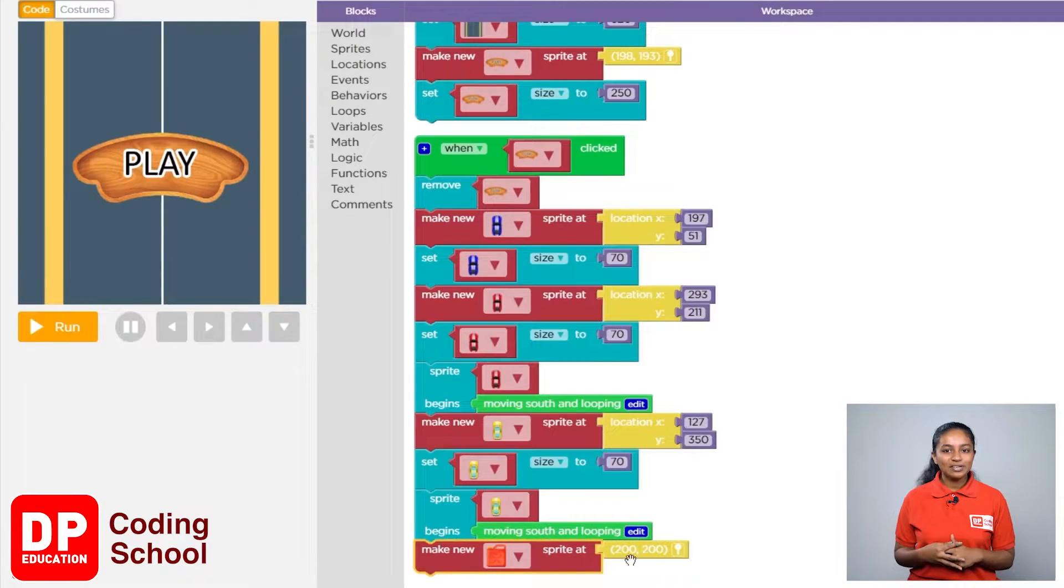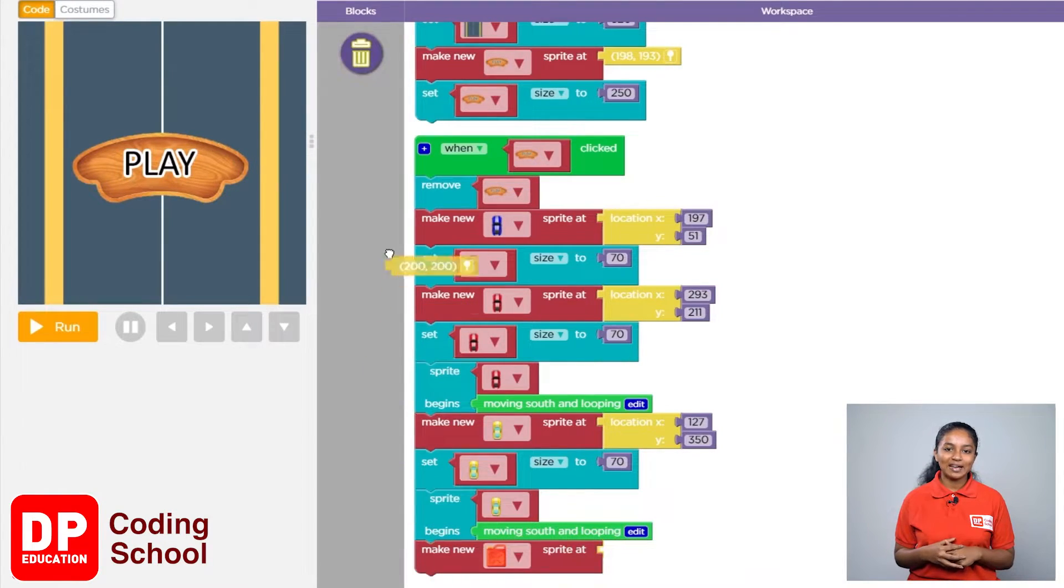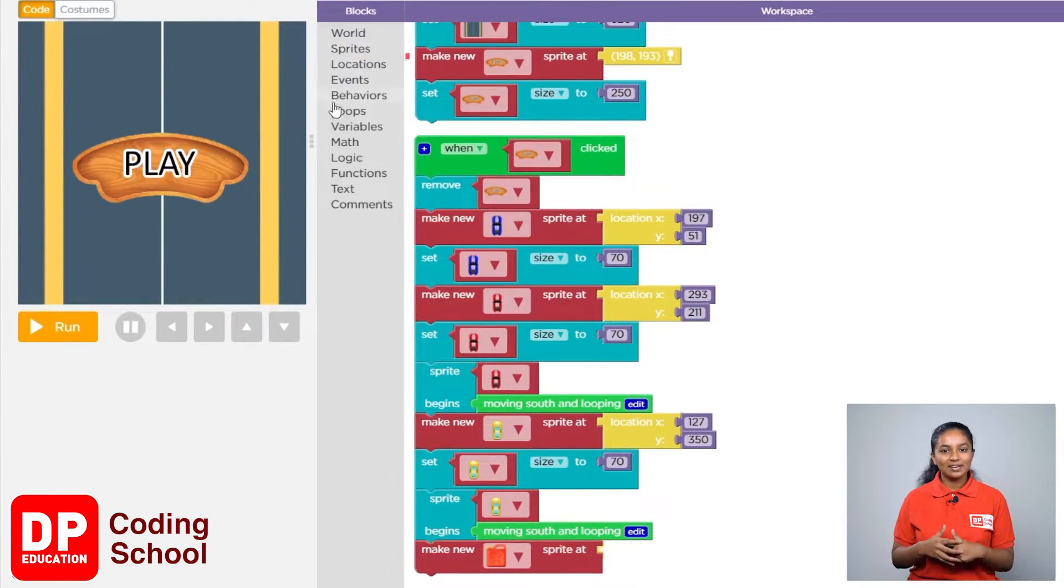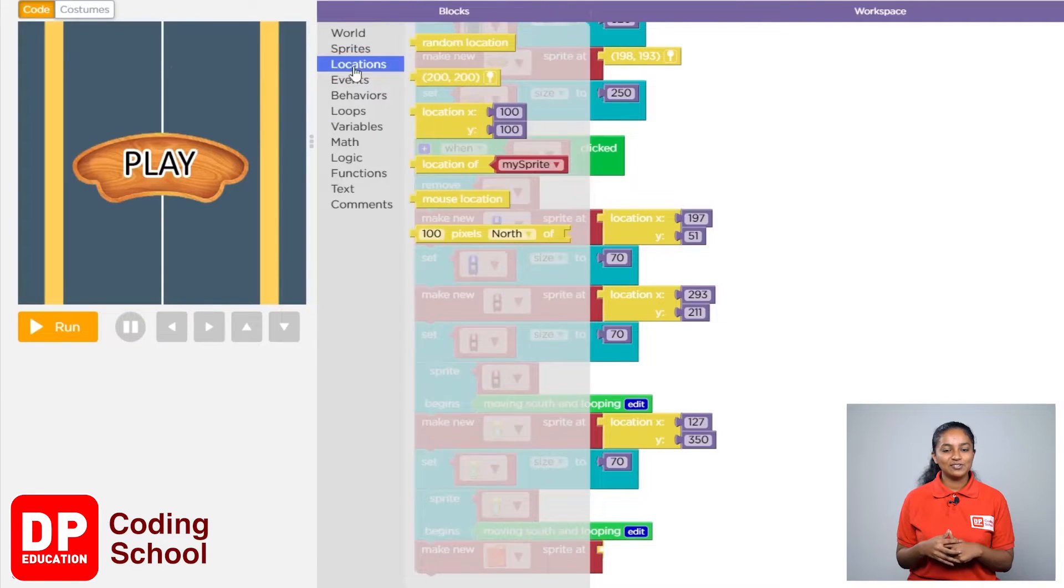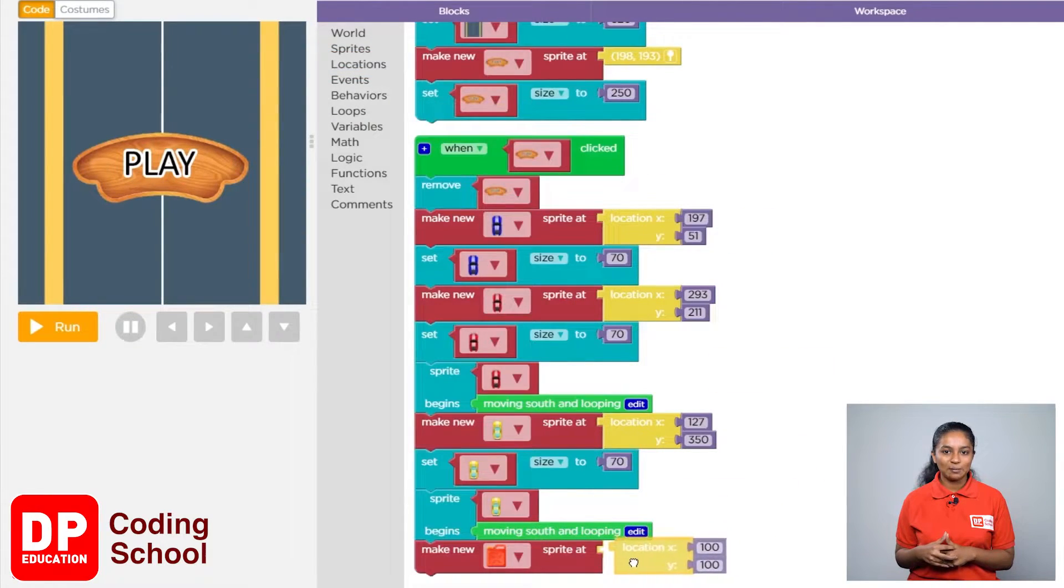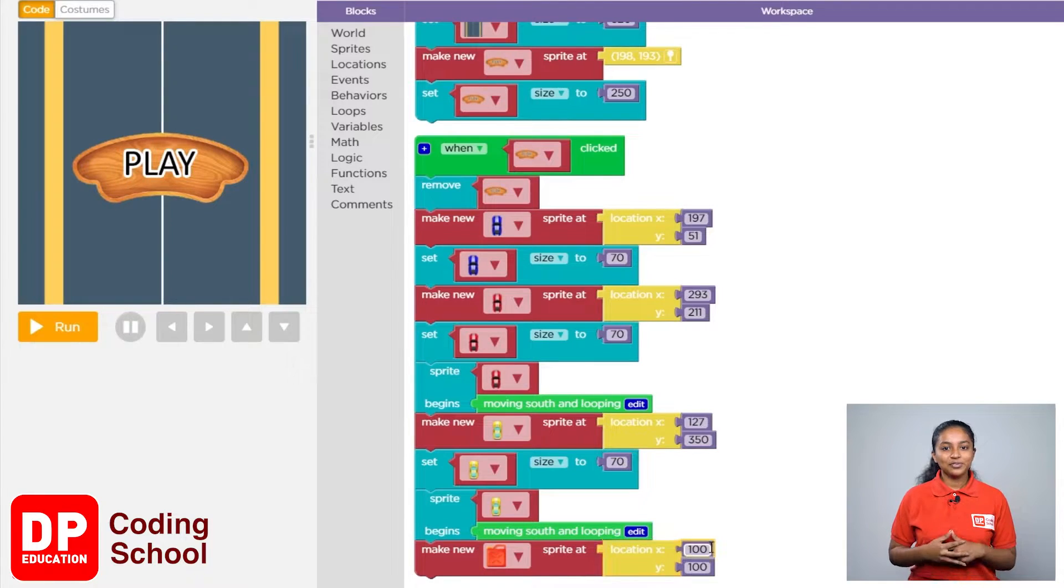I'll now delete the Location block in front of the Make New Sprite Add block. Click on Locations again and drag the Location XY block. For X, type 190, and for Y, type 346.